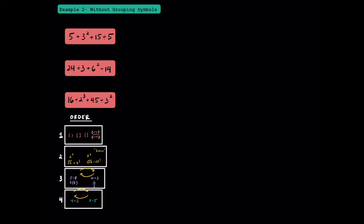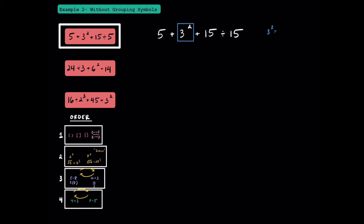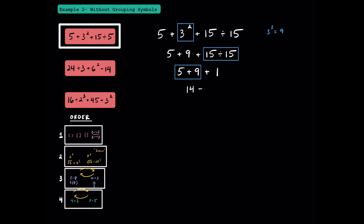Here in example 2, let's try some problems that have exponents included. Our new operation of exponents here is going to take priority. This 3 squared is really just 3 times 3, and that's equal to 9. After evaluating our exponent, out of the remaining three operations, division goes first. 15 divided by 15 equals 1. Here we have two addition problems, so we're just going to go from left to right. 5 plus 9 is 14, and finally 14 plus 1 is equal to 15. That's our answer for this first one.